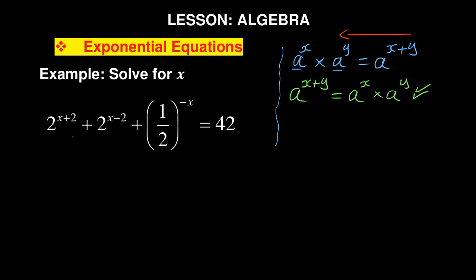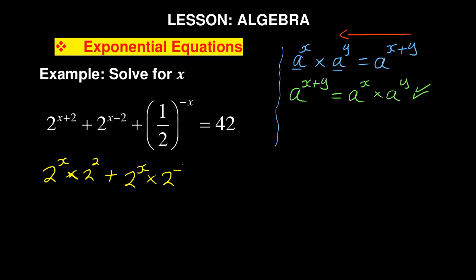Applying this, 2 to the power of x+2 becomes 2 to the power of x, times 2 to the power of 2. Similarly, 2 to the power of x minus 2 becomes 2 to the power of x, times 2 to the power of negative 2.